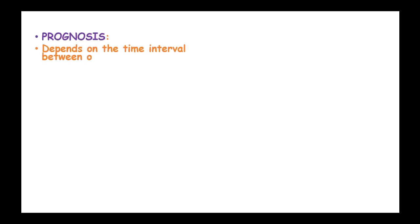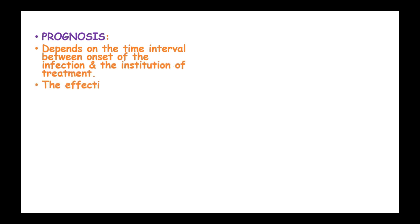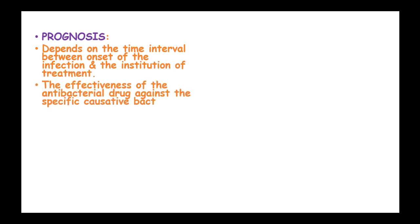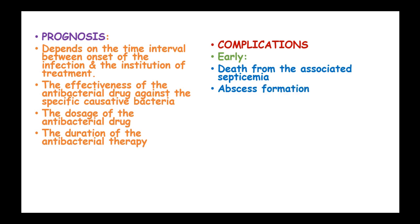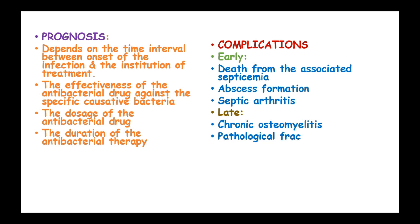The prognosis depends on the time interval between onset of infection and institution of treatment, the effectiveness of the antibacterial drug against the specific causative bacteria, the dosage of the antibacterial drug, and the duration of antibacterial therapy. Complications include early complications such as death from septic septicemia, abscess formation, and septic arthritis, and late complications such as chronic osteomyelitis, pathologic fractures, joint contractures, and local growth disturbance.